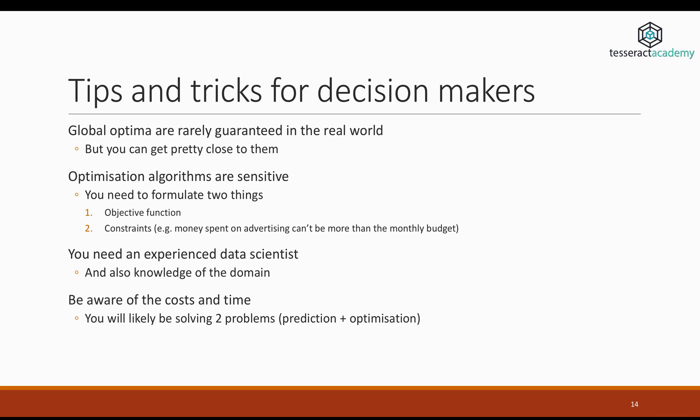This is why these optimization projects need to go through an iteration life cycle, then you need to do sanity checks with the decision makers within the organization to make sure that the results make sense. And this is why it's important to have an experienced data scientist who also understands the domain. Who also understands what the resources actually represent. They understand the weights between the different resources, which ones are more important and the weights between the different goals.